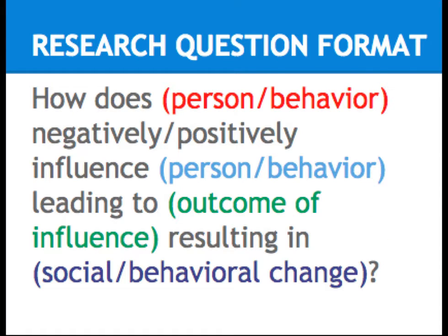Here is the format for your research question: How does a person or behavior negatively or positively influence a person or behavior leading to an outcome of influence resulting in a social or behavioral change? Here you are defining four separate variables and will conduct research on how they are related, then report your findings in your presentation.